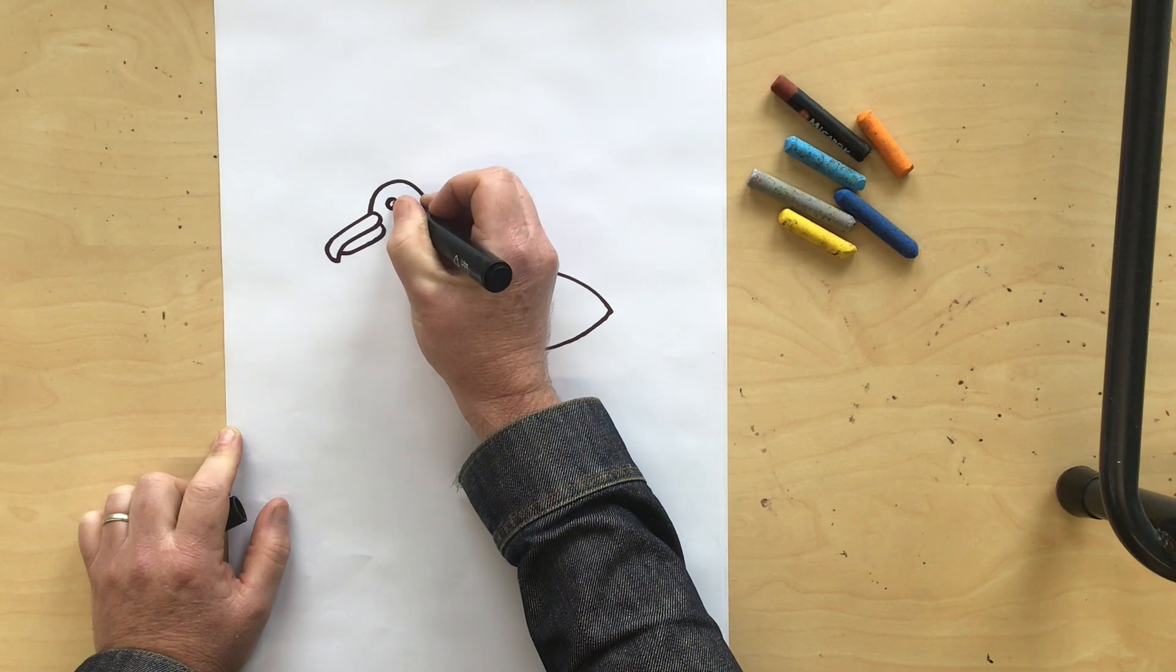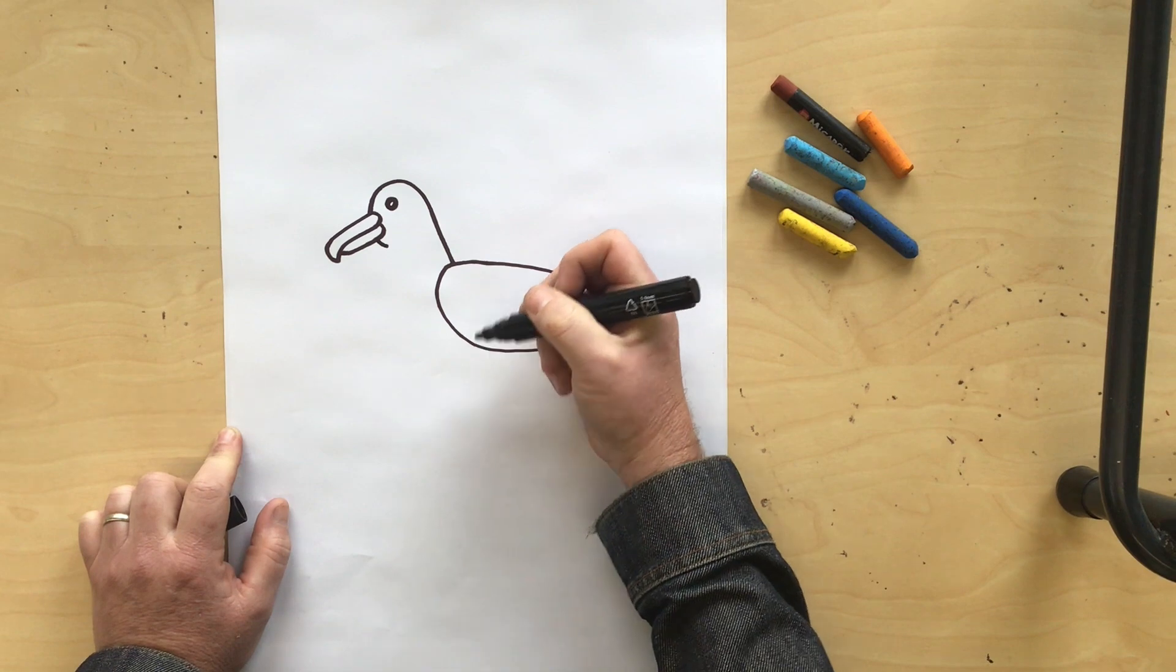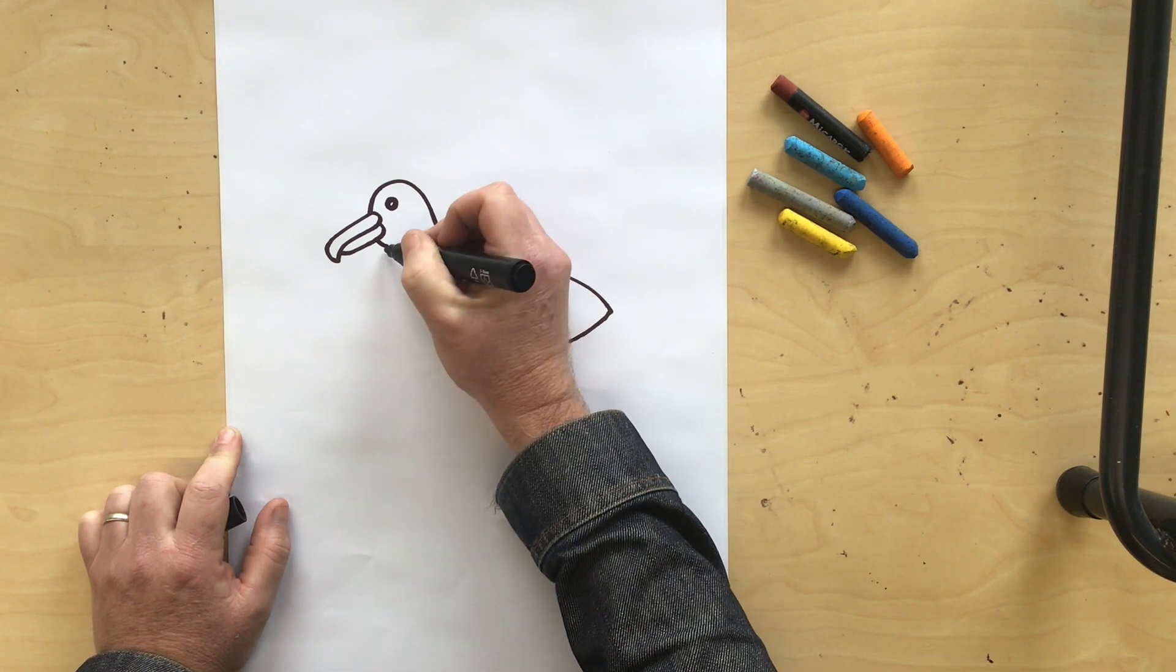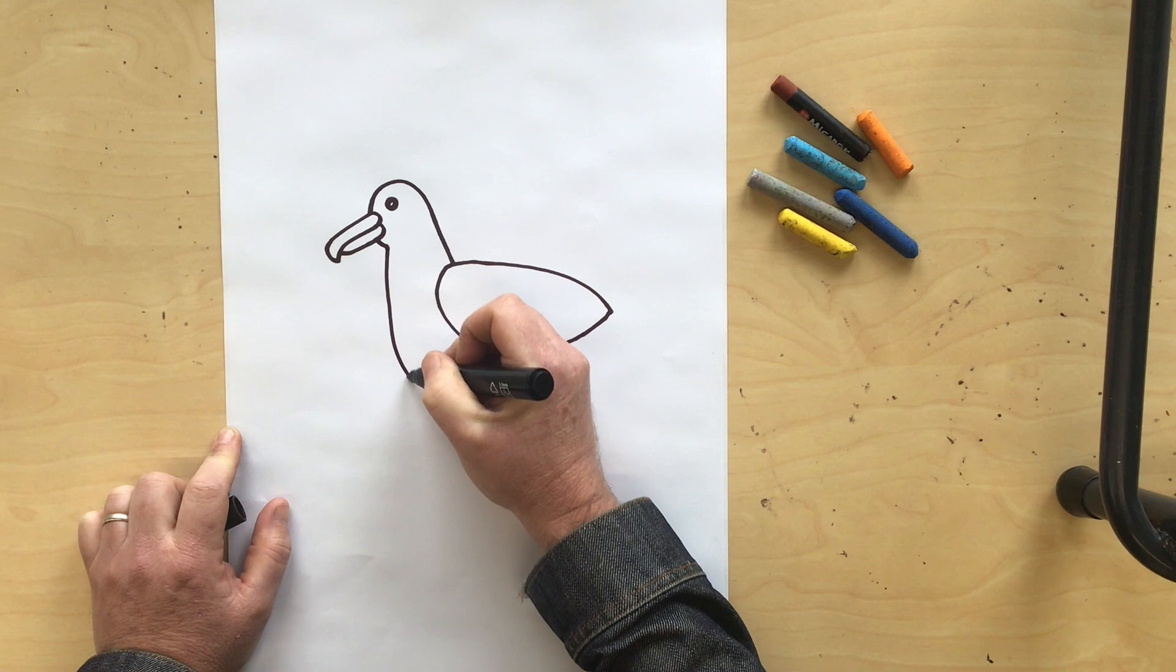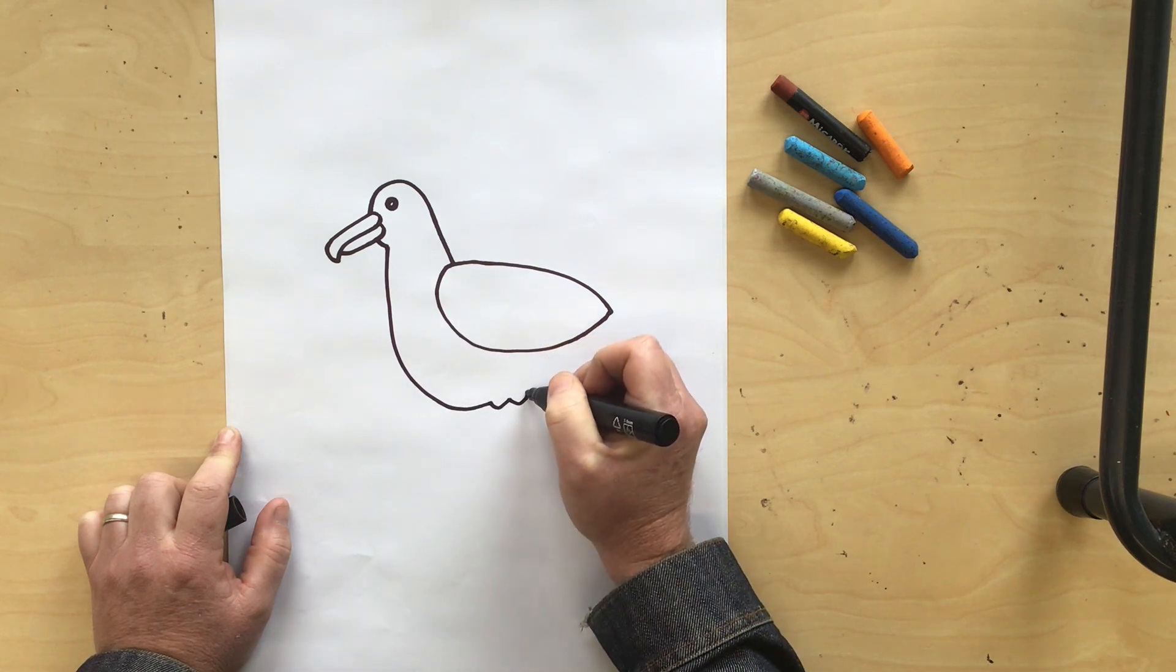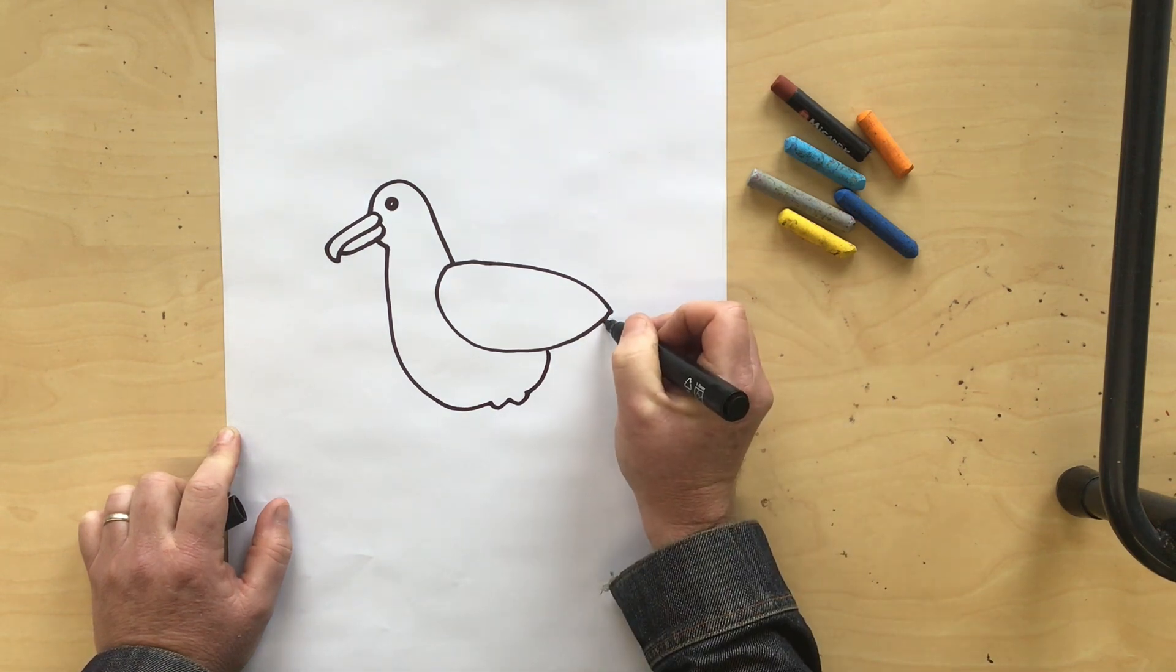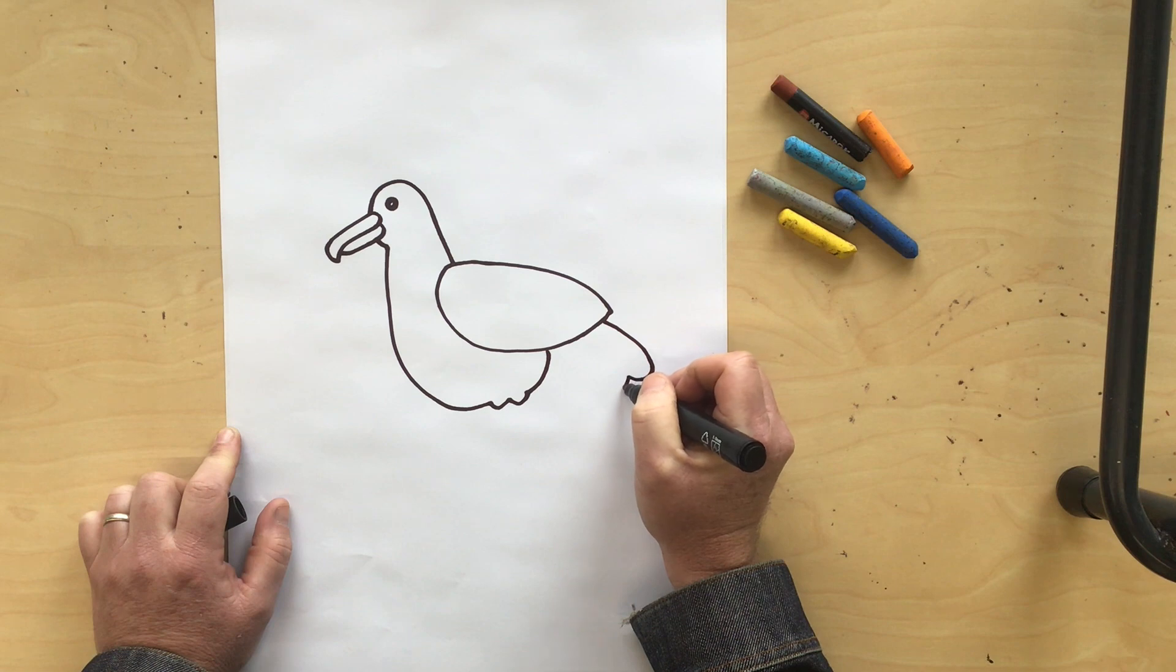Okay, put in a little chin and now we're going to bring a curving shape around, two little bumps, and bring it up to make your body. Let's put a little tail feather on here, come back two little bumps and bring it there.